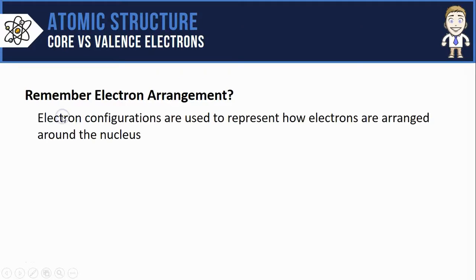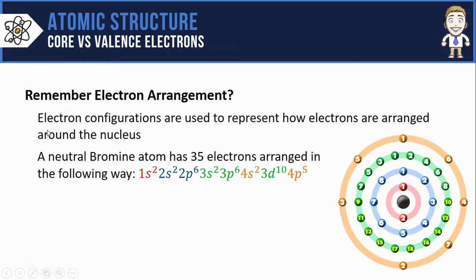First, remember that electron configurations are convenient ways to represent how the electrons are arranged around a nucleus. So pick any element like a neutral bromine atom shown here on the right with 35 electrons.